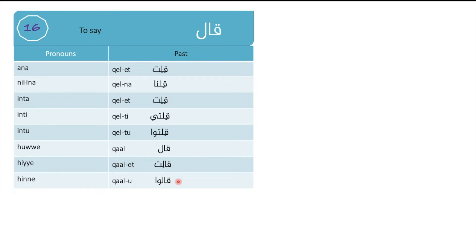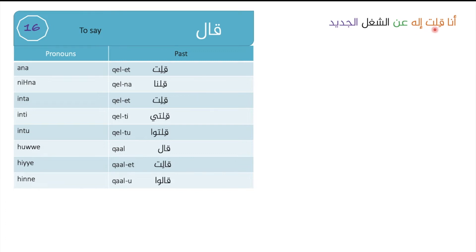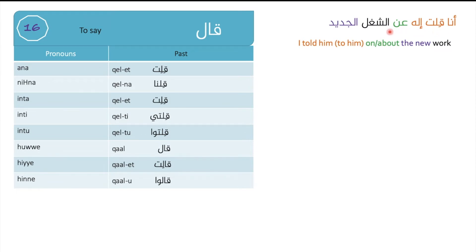Here are some examples. Ana illet illu an al-shughal al-jdeed — I told him about the new job. Note that in natural speech, native speakers jump over the alif (the airy letter), so they say illet illu, joining the 't' with the 'l' directly. The suffix -u here is the possessive pronoun for third person 'he'. So: ana illet illu an al-shughal al-jdeed — I told him about the new job or work.